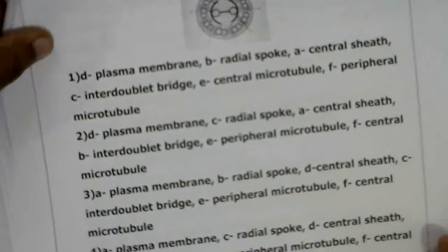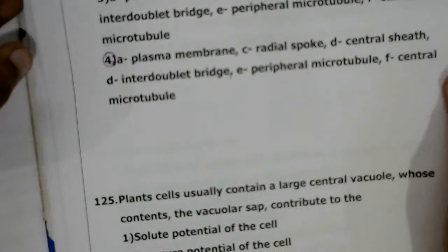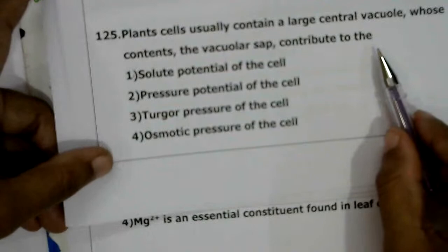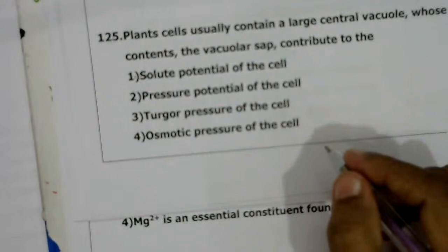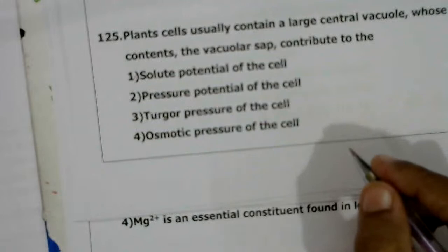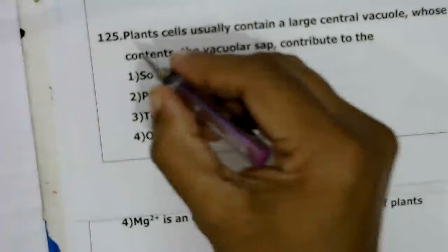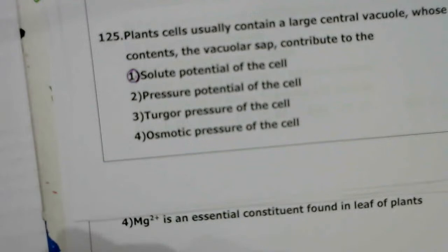Next question: plants usually contain a large central vacuole, whose contents contribute to the — solute potential, pressure potential, turgor pressure, or osmotic pressure — of the cell? The vacuolar sap is responsible for the solute potential of the cell. Solute potential refers to the presence of solute particles, which decreases the water potential. The correct answer is the first option.